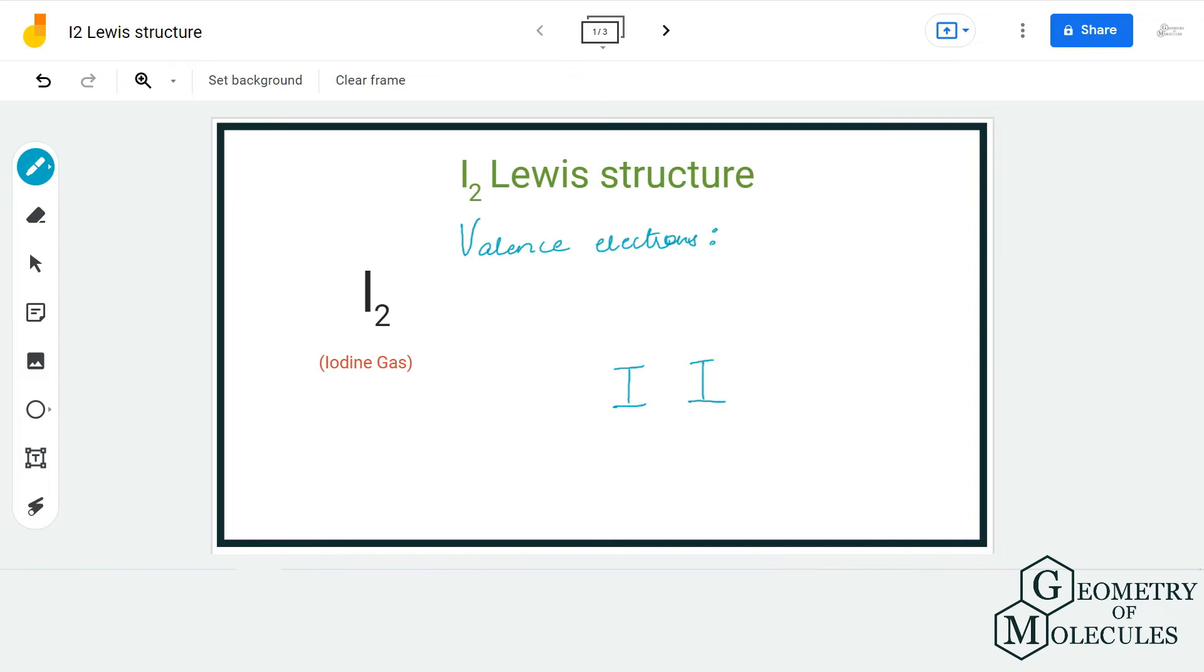Hi guys, welcome back to our channel. In today's video, we are going to help determine the Lewis structure for iodine gas. It has a chemical formula of I2, and to understand its Lewis structure, we will first calculate the total number of valence electrons.